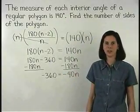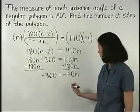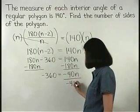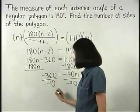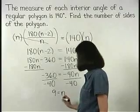And finally, we divide both sides of the equation by negative 40. And we find that 9 equals n.